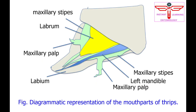The clypeus — the head segments above the labrum — and the labrum and labium form a cone-shaped structure. Only the left mandible is present. The maxillary stylets are held together to form the food canal. There is no salivary canal; the salivary duct opens into the front of the esophagus.